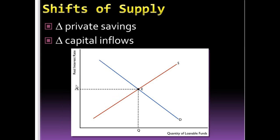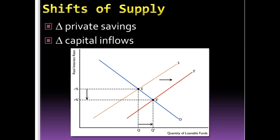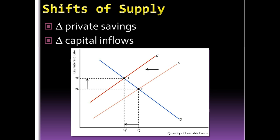The supply of loanable funds shifts when there's more savings — meaning more money available for banks to lend — or when there are capital inflows from other countries seeking a better rate of return in America. If private savings increase or money flows in from abroad, supply shifts right and the interest rate falls. If the opposite occurs, supply shifts left and interest rates rise.